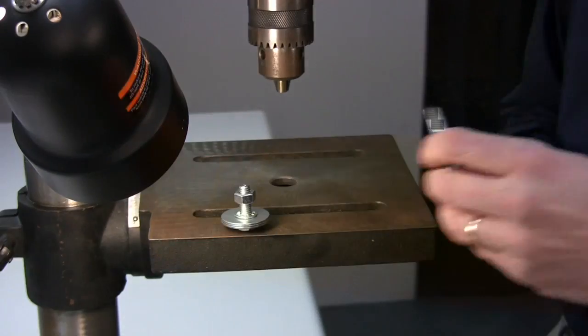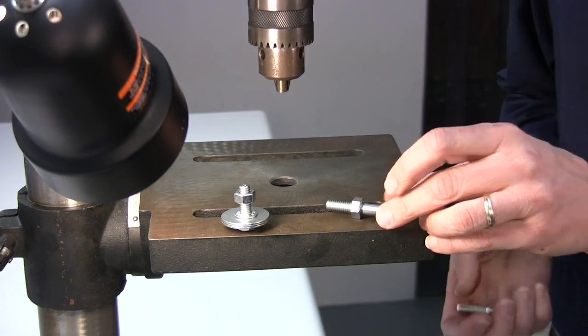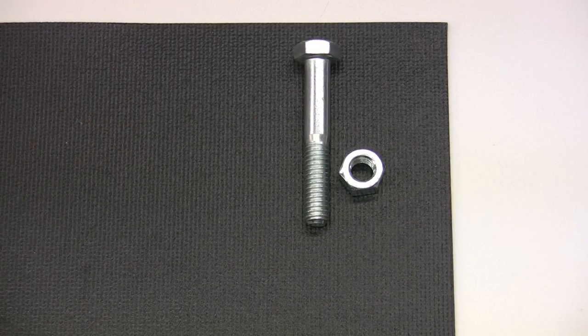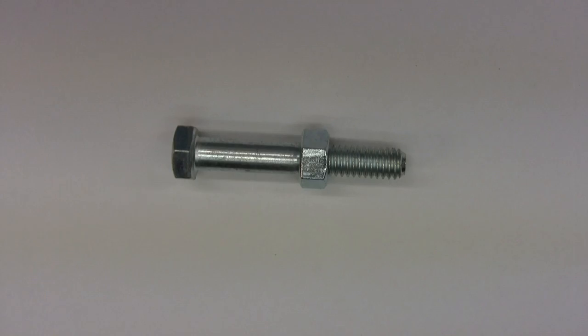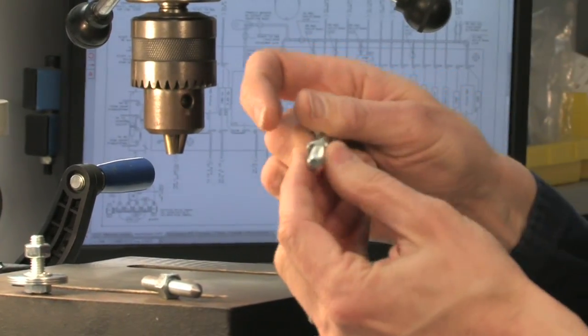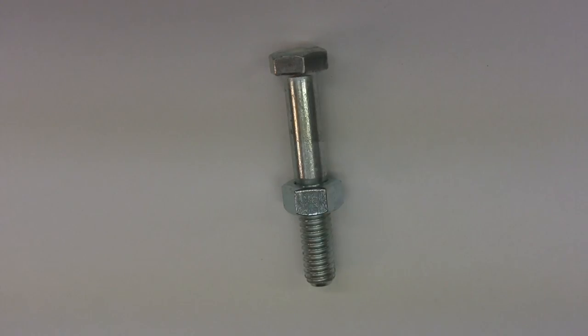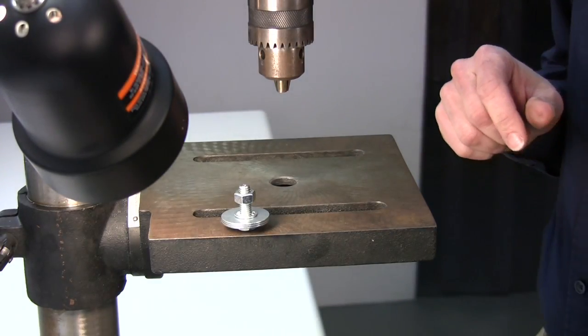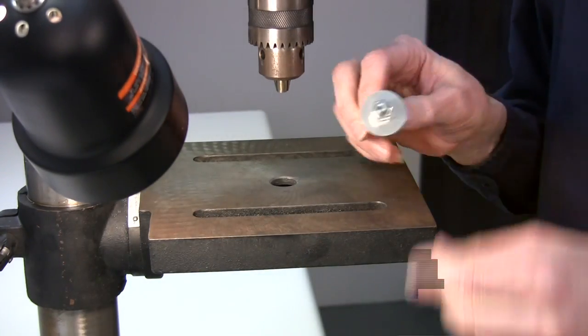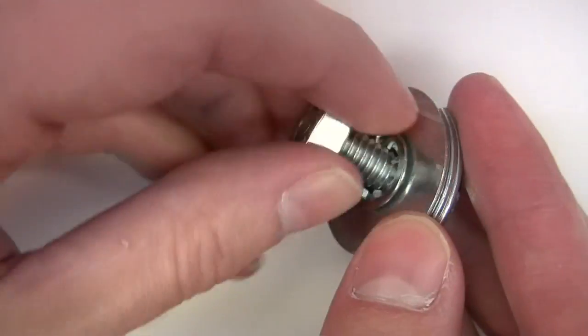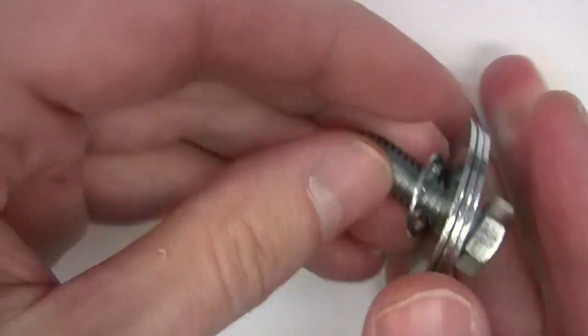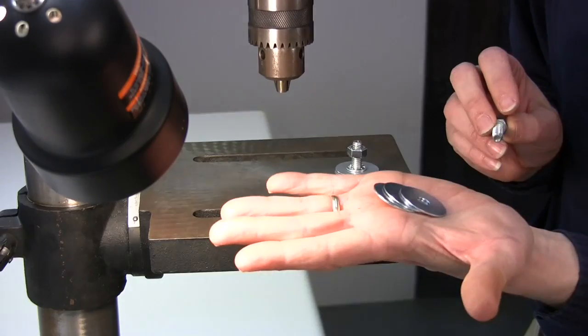The swaging tool, which is this tool right here, started life as a simple hex head bolt and a single nut. In this case, what we do is end up cutting off the head and filing it down to a cone shape.